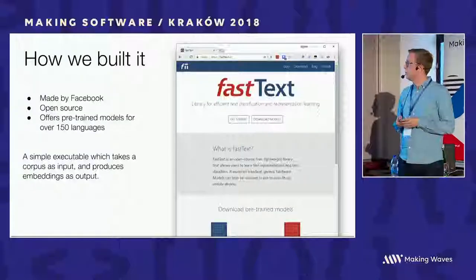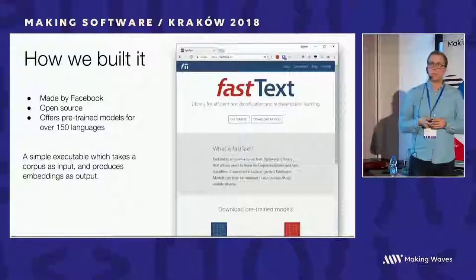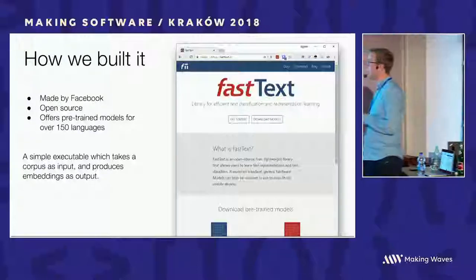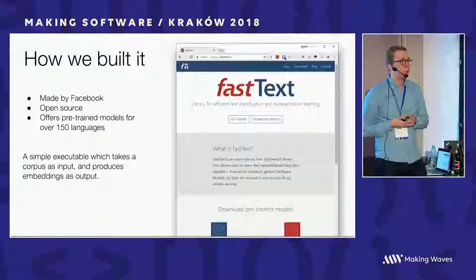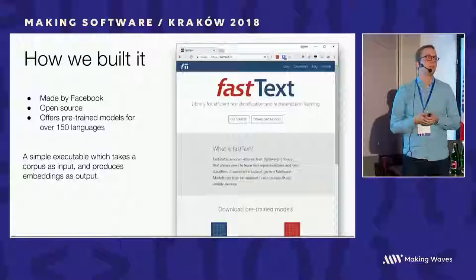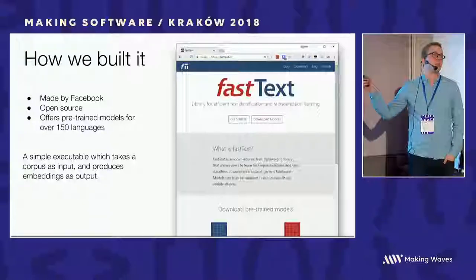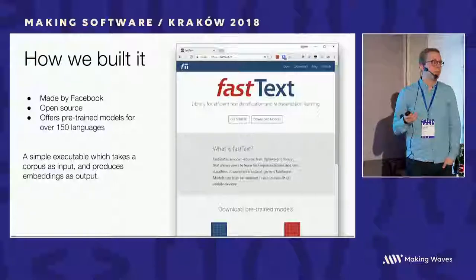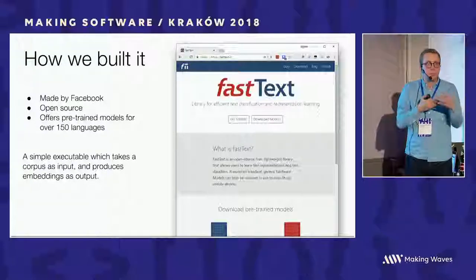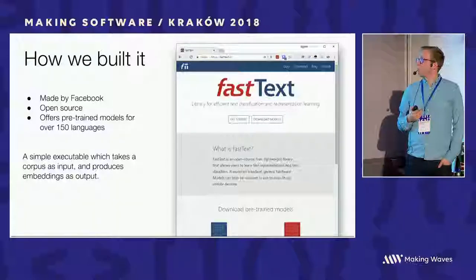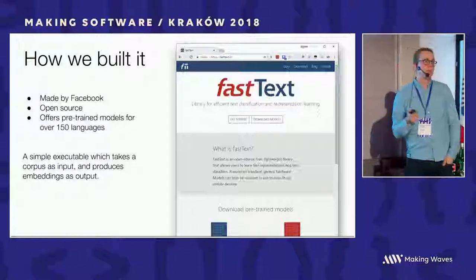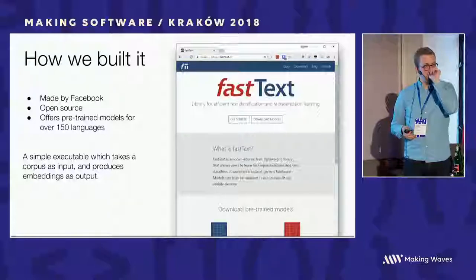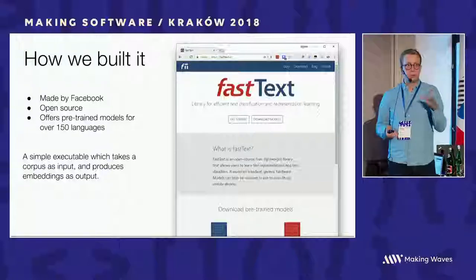We built this using FastText, the open source word embedding algorithm by Facebook. FastText also offers pre-trained models for over 150 languages, trained on Wikipedia data. When we first started out we used the Wikipedia model, but it turned out Wikipedia articles are written differently than news articles, so it didn't completely match what we were trying to achieve. We decided to train our own — and that's actually really simple: it's just an executable, you provide a corpus file, set some parameters, it runs for an hour, and you get back word embeddings. You should all try it, it's actually really fun.